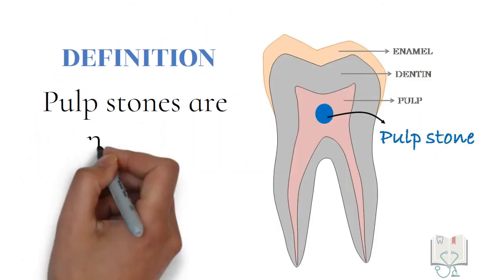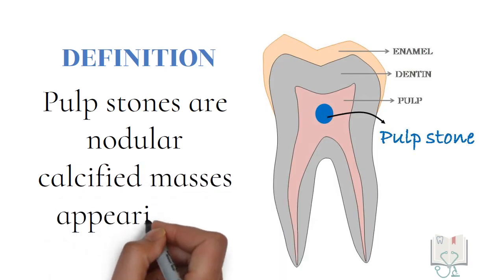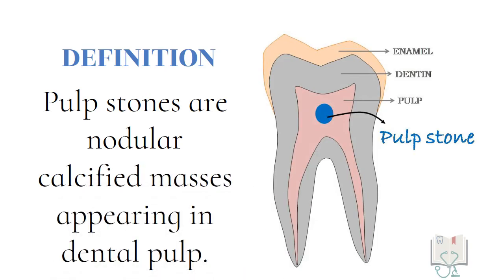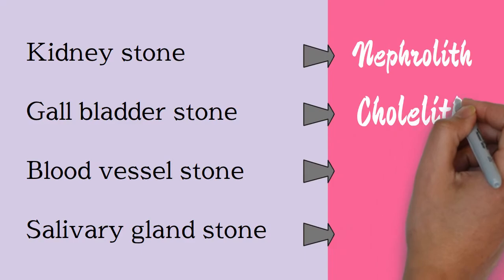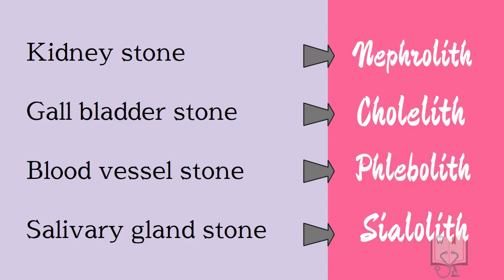Pulp stones, also known as denticles, are nodular calcified masses appearing in dental pulp. We can find many such ectopic calcifications in other parts of the body.